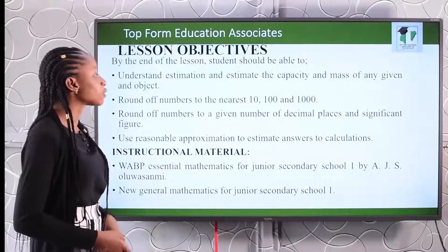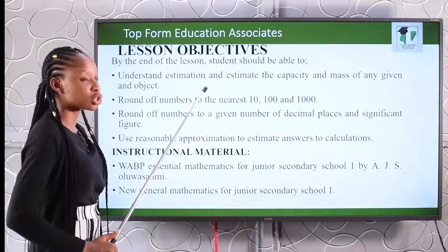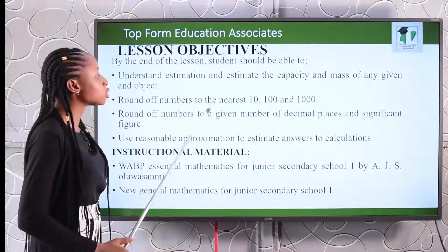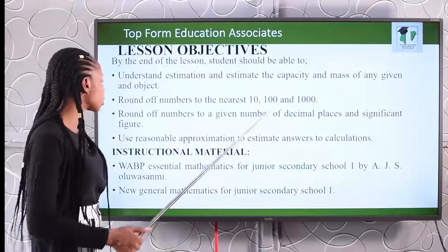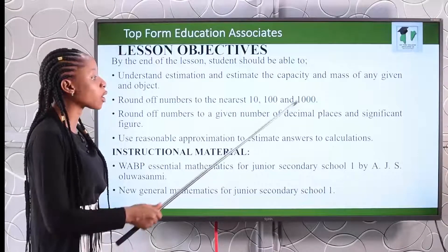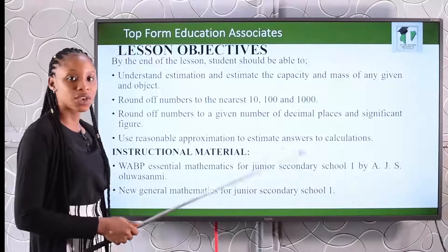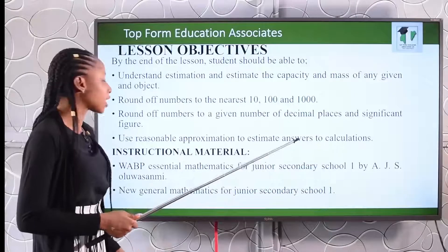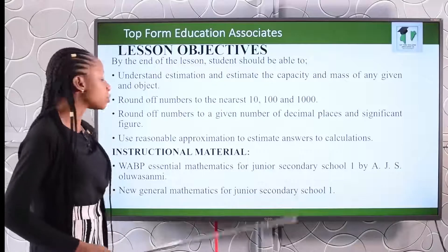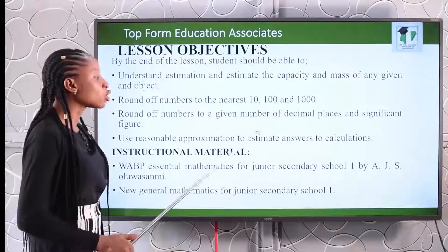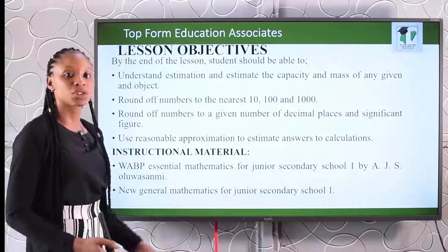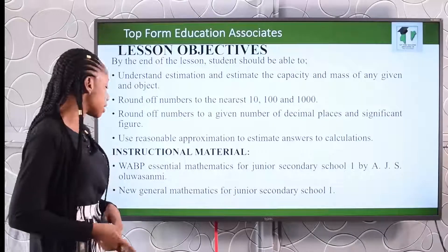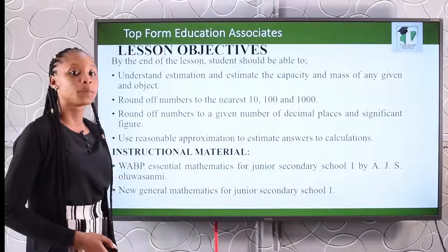The lesson objectives: by the end of today's lesson, you should be able to understand estimation and estimate the capacity and mass of any given object. You should also be able to round off numbers to the nearest ten, hundred, and thousand, and round off numbers to a given number of decimal places and significant figures. You should be able to use reasonable approximation to estimate answers to calculations. The instructional materials are the Essential Mathematics for Junior Secondary School Book 1 and the New General Mathematics for Junior Secondary School Book 1.